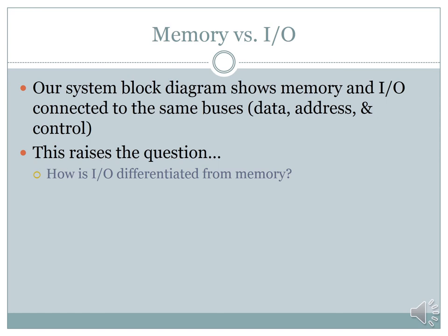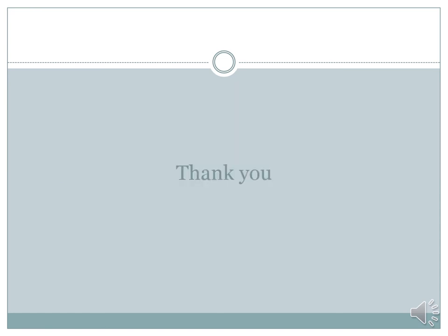Then we look at memory versus input/output. Our system block diagram shows memory and input/output connected to the same bus — data, address, and control. This raises the question: how is input differentiated from output and also from memory, if the block diagram shows they are connected to the same bus? That will be our next point of discussion. For now, we end here — go and revise and practice drawing memory maps.